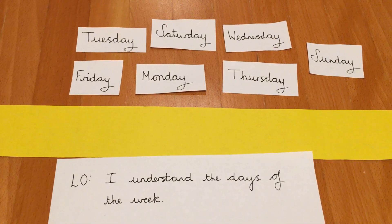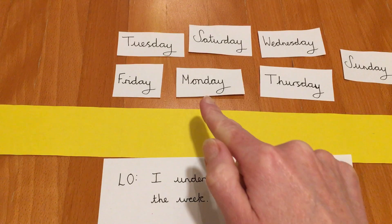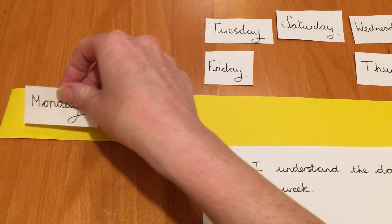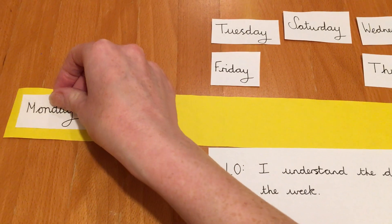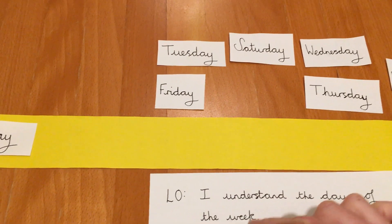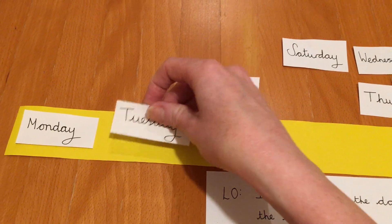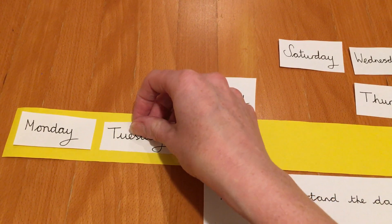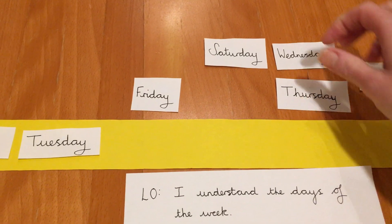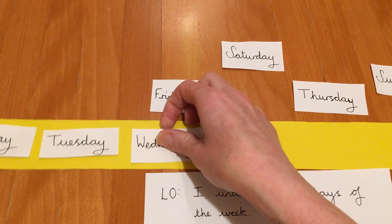Well, let's pick out the first day of the week. What is it? It is Monday, isn't it? Let's stick that on this timeline of a week. Monday. So what follows Monday? Tuesday — that's the second day of the week, isn't it? And what follows Tuesday? Wednesday.